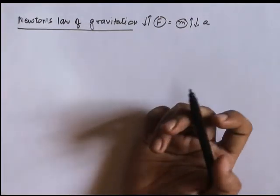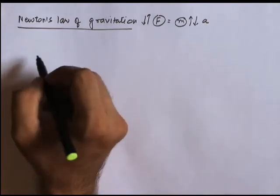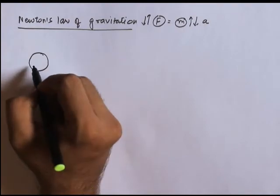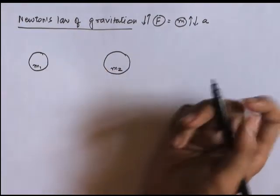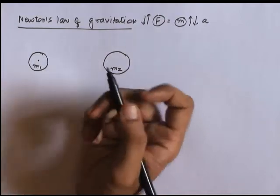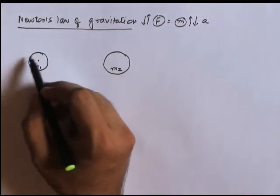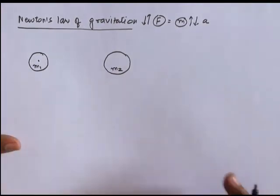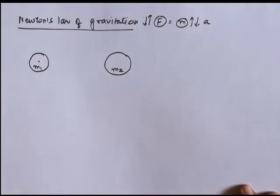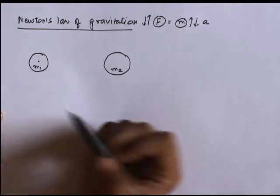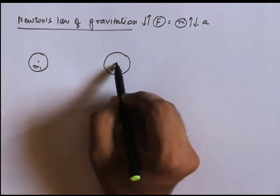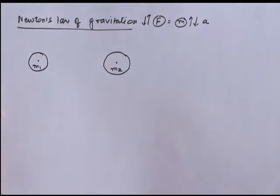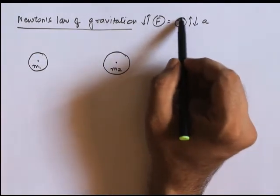If I consider two objects — let's say this is an object of mass m1, and this is another object of mass m2. I have assumed them to be spherical masses, but it is not necessary that every time the mass would be spherical; it can be of any shape. Just to understand Newton's law of gravitation, I've taken spherical bodies, with this being the center of m1 and this the center of m2.